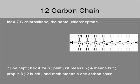For a seven carbon chloroalkane, the name is chloroheptane. Seven uses hept, hex is for six. Pent just means five. Four means but, prop is three, two is eth, and meth means a one carbon chain.